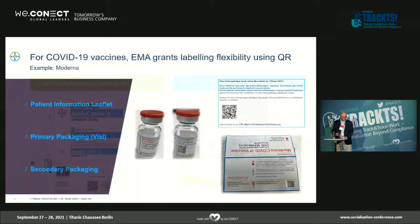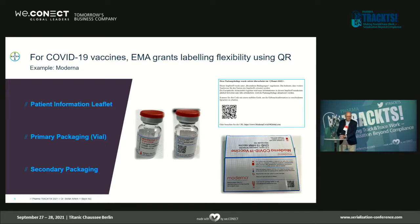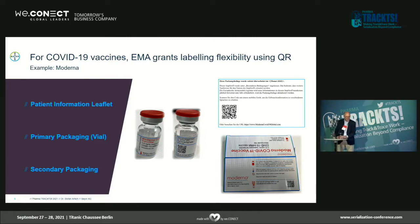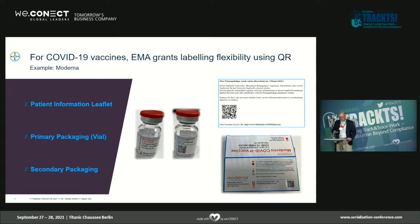There are other examples. As part of the fight against COVID, the EMA granted labeling flexibility for vaccine manufacturers. Here you see pictures from the Moderna product taken at the corona vaccination center nearby. The QR code appears on all levels: on the packaging leaflet, on the primary packaging, and on the secondary packaging.